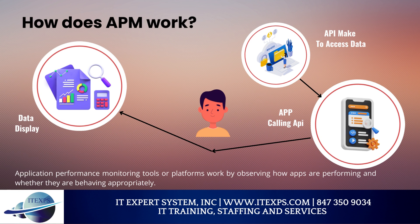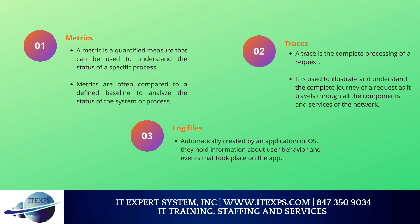How does APM work? Application performance monitoring tools work by observing how apps are performing and whether they are behaving appropriately. If the apps are not behaving appropriately, data is collected on the source of the issue. The gathered data is analyzed in the context of its effect on the business, and the application environment is corrected to resolve any similar problems before they occur. When configuring an APM platform, three categories of data should be considered. First, metrics — a metric is a quantified measure used to understand the status of a specific process. Metrics are often compared to a defined baseline, and changing metrics are a common indication of an underlying issue.